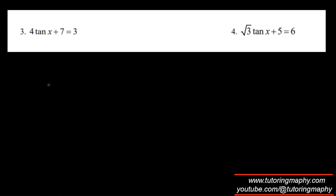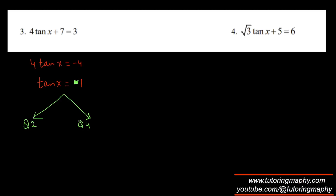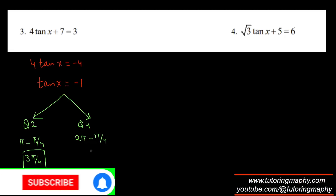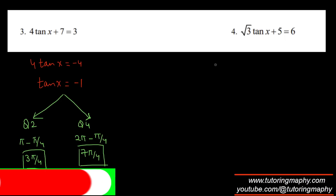For tan(x): subtracting 7 from both sides and dividing by 4 gives tan(x) = −1. Tangent is negative in quadrant 2 and quadrant 4. The reference angle for tan = 1 is π/4. Quadrant 2 gives π − π/4 = 3π/4, and quadrant 4 gives 2π − π/4 = 7π/4. Those are the two solutions.